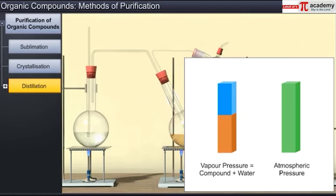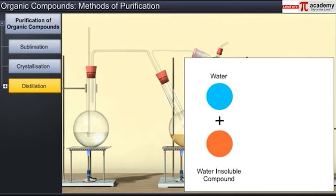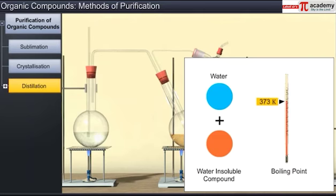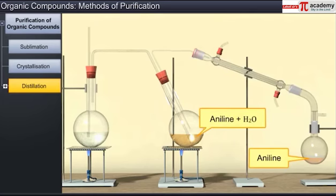Since the vapor pressure of the organic liquid is lower than the atmospheric pressure, the organic liquid vaporizes at a lower temperature than its boiling point. Hence, if one of the substances in the mixture is water and the other is a water-insoluble but steam-volatile substance, then the mixture will boil close to but below 373 Kelvin. Aniline is separated by this technique from an aniline-water mixture.